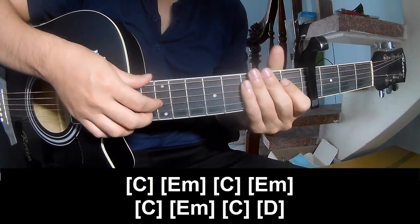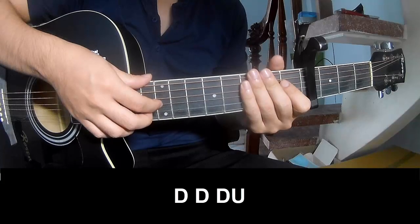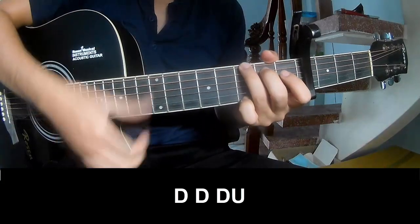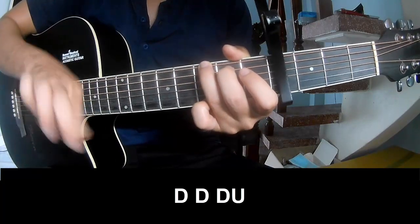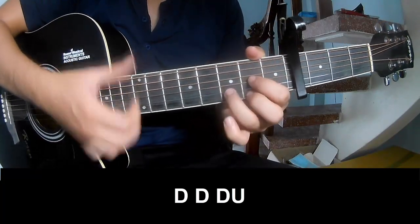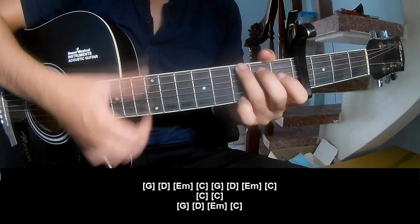The strumming pattern is the same for each chord. Choose your chord and play bass 3-2-1-3, then play a long G.